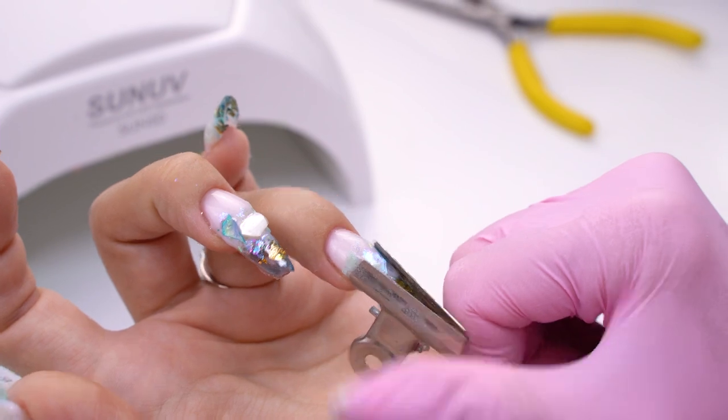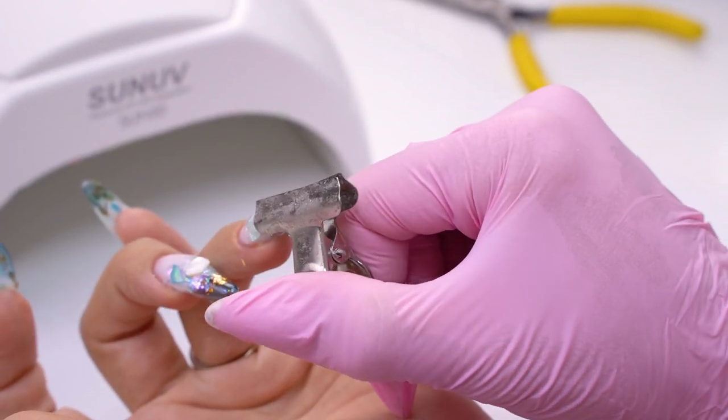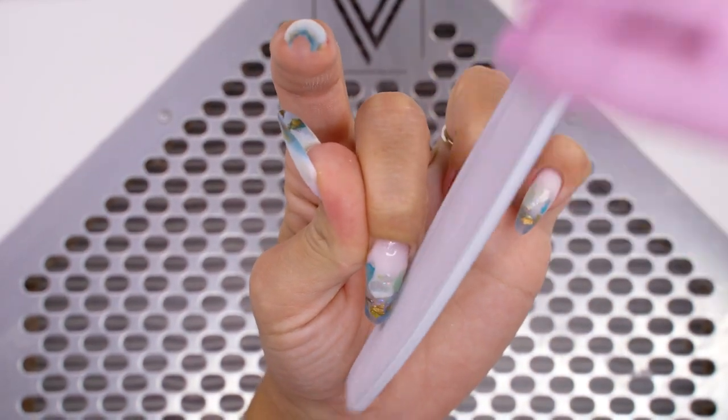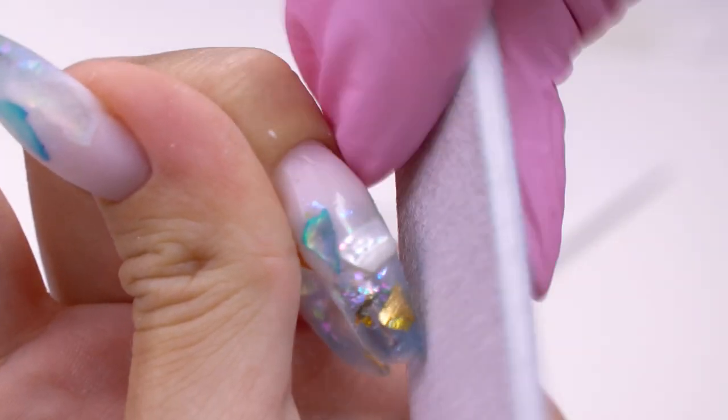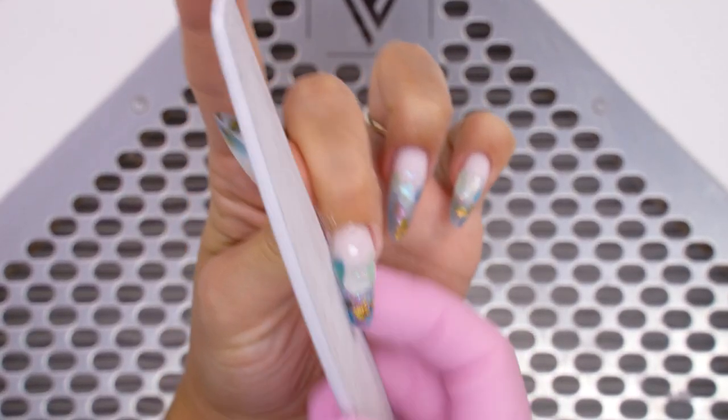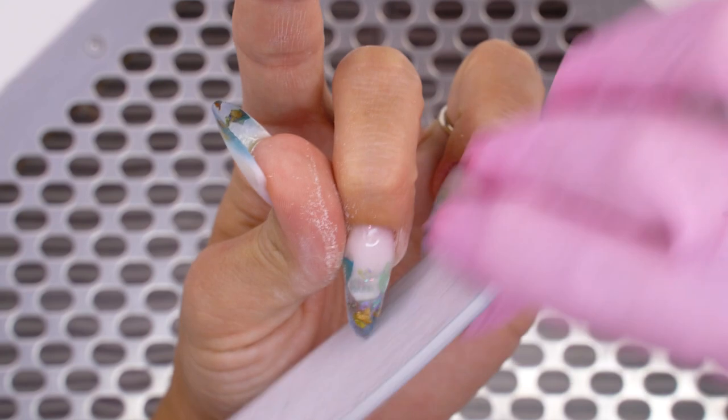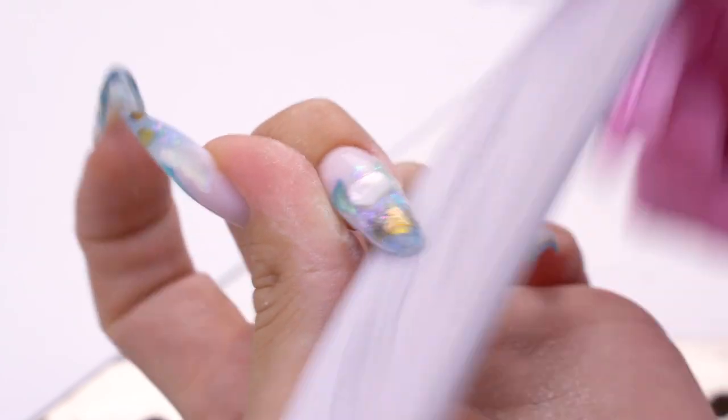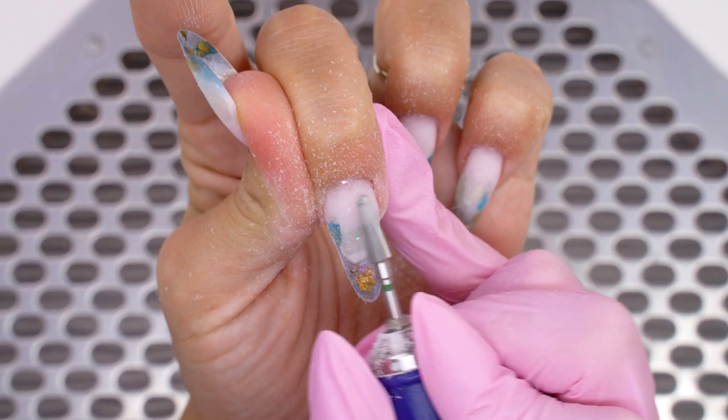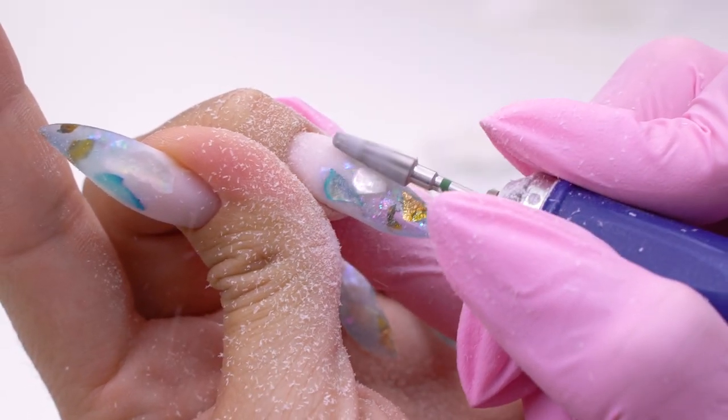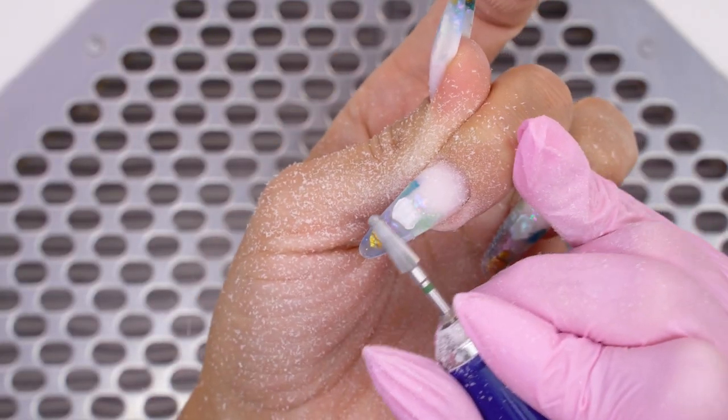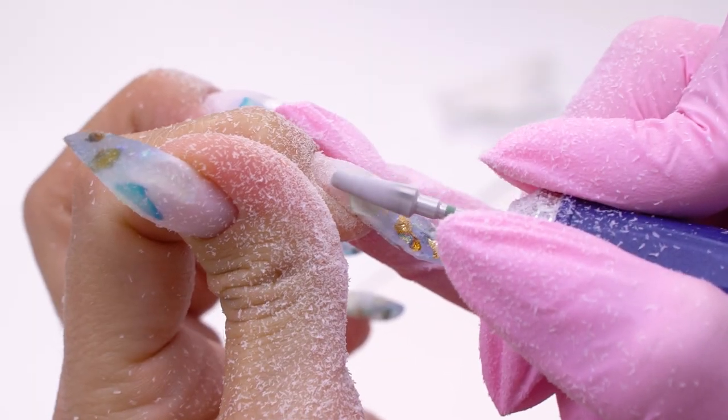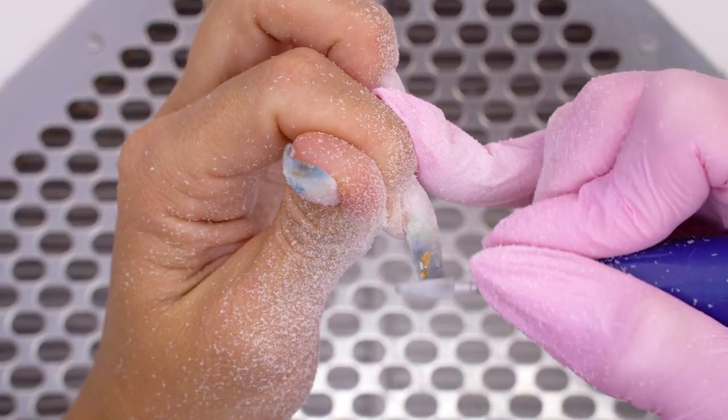Now I can wipe off the tacky layer and proceed with filing. To form an even surface right away without filing a lot, first I use a carbide drill bit. We can file up most of the material with it, prepare the surface and then finish it off with a file.